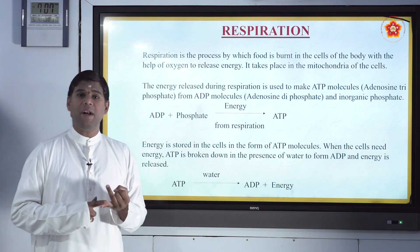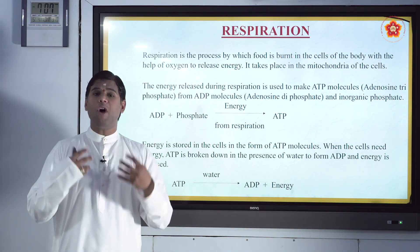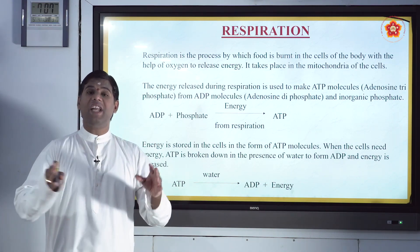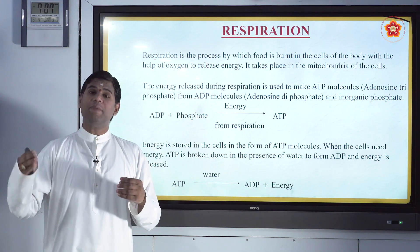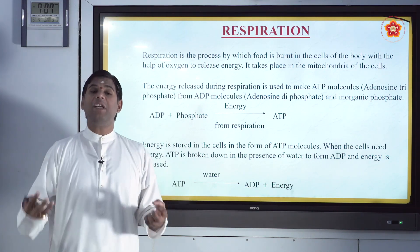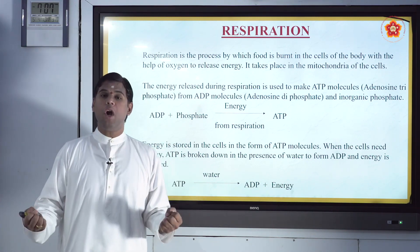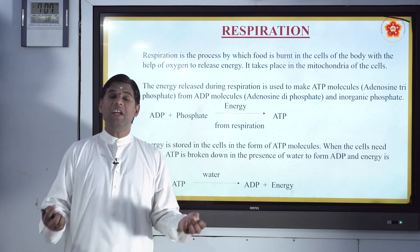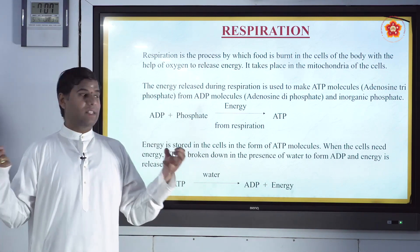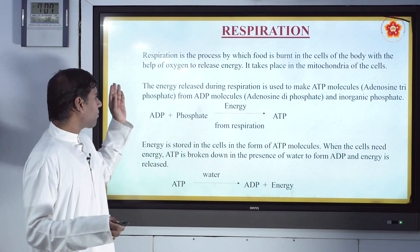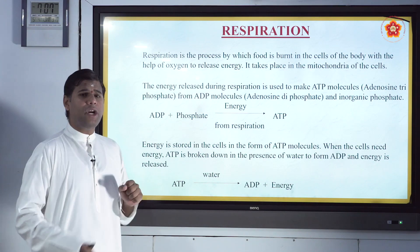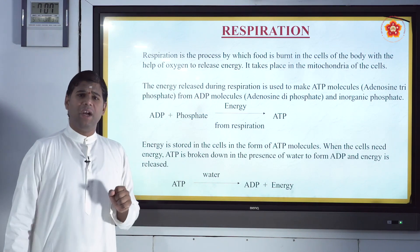How does it happen? When you take in oxygen, it goes to the food and breaks it down into simpler particles, and the energy is given out, where the energy is utilized by the cells. Now let's see how it actually takes place.